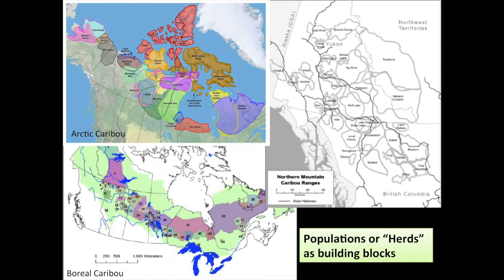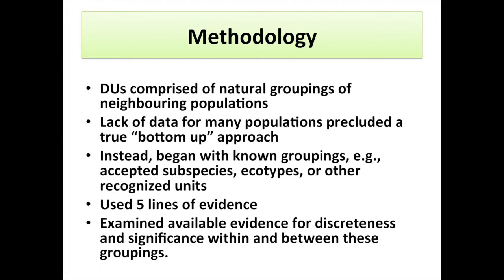The building blocks of management are the population or herd level, and for better or worse these are delineated in much of the range. Ideally we would have liked to start from the bottom up rather than being held to the previous scheme and going top-down. The bottom-up approach would have been great — having each population look at neighboring ones in a big matrix — but the information just isn't there. There are many more populations with zero information than those with a lot, so it proved impossible to do it from the bottom up. Instead we had to work through natural groupings of neighboring populations, starting with known groupings that were a hodgepodge of ecotypes, subspecies, and other recognizable units.